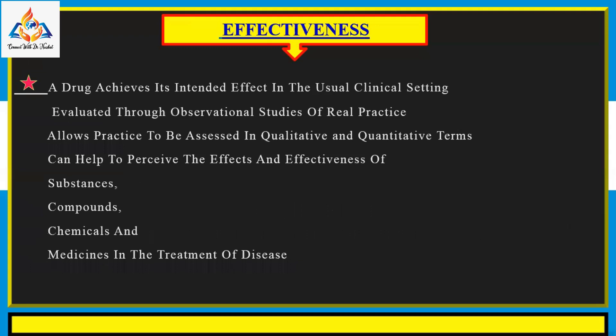Effectiveness can be defined as the extent to which a drug achieves its intended effect in the usual clinical setting. It can be evaluated through observational studies of real practice, allowing practice to be assessed in qualitative as well as quantitative terms. The evaluation of effectiveness of pharmacotherapy includes measurable improvement in clinical signs and symptoms and/or laboratory values, while the evaluation of safety includes evidence of adverse drug reactions and toxicity.